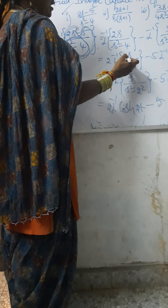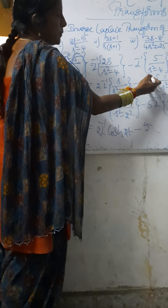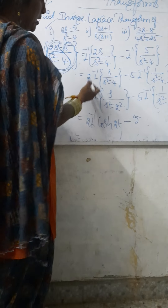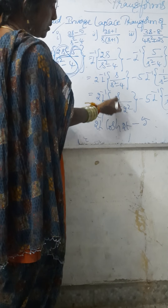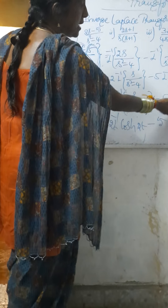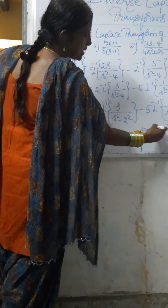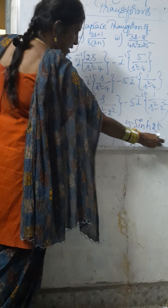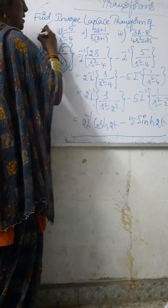This becomes 2 times inverse Laplace Transform of s by (s squared minus 4) minus 5 times inverse Laplace Transform of 1 by (s squared minus 4). Rewriting as s squared minus 2 squared, we apply the formulas to get 2 cosh(2t) minus 5 sinh(2t). This is the solution of this problem.